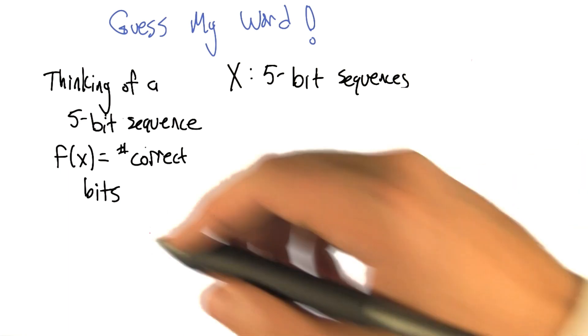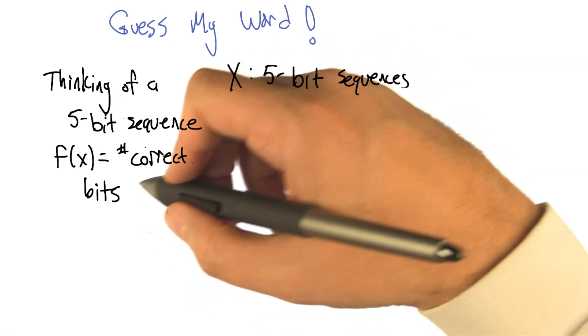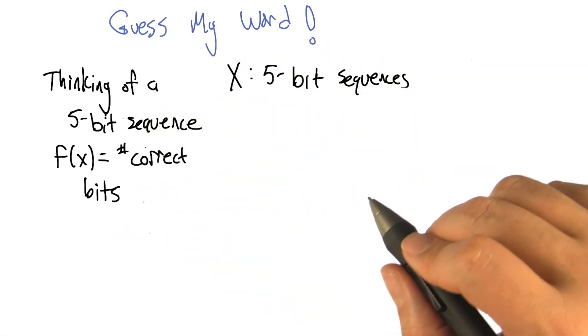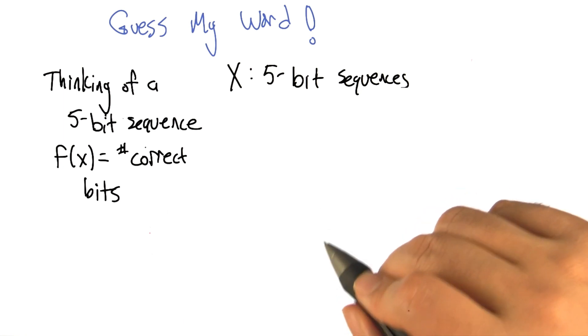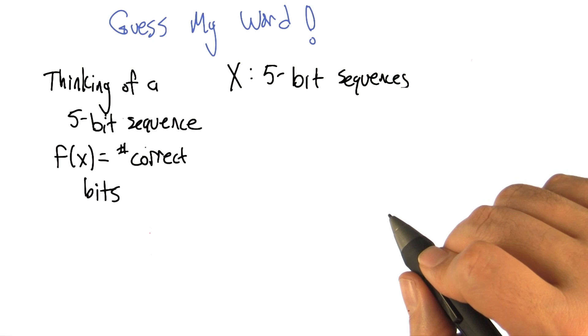And what we're going to do is for each time you guess a five-bit sequence, I'm going to tell you the number of correct bits. So in each position, if you matched what I have in that position, then I give you an additional point for that.